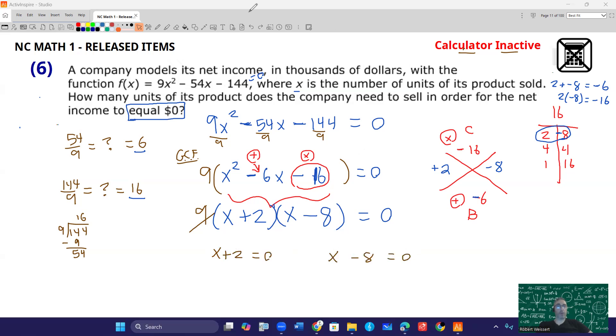You're going to solve both of those for x. So one of your solutions is x = -2, and one of your solutions is x = 8.